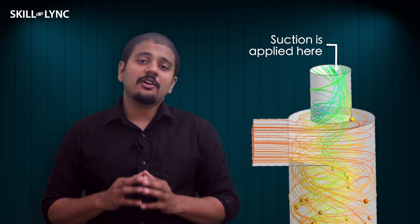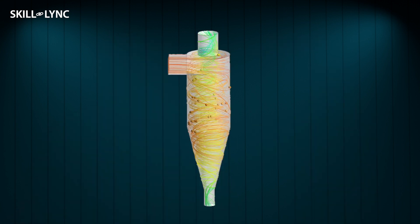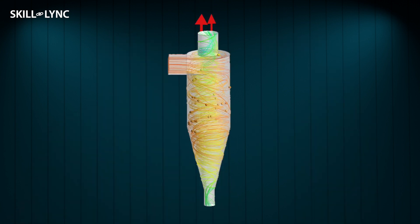But how are we preventing the air from going through the dust outlet? Well, this is where pressure helps us. We will apply suction to the top outlet and this causes the air to exit through the top. Thus, we have clean air flowing through the top while dust collects at the bottom.